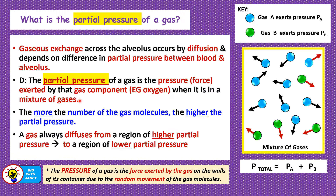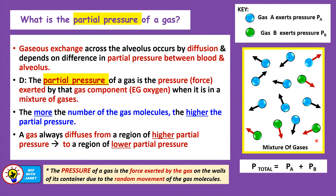The partial pressure of a gas is the pressure or force exerted by that gas component, such as oxygen, when it is in a mixture of gases — for example, when oxygen is together with carbon dioxide and other gases in the atmosphere. Take a container with two gases: gas A, denoted by blue particles, and gas B, denoted by green particles. Gas A exerts its own pressure on the container as its molecules move randomly, collide with each other, and knock the walls of the container. That is when it produces the pressure or force.